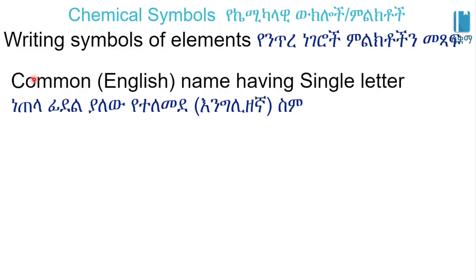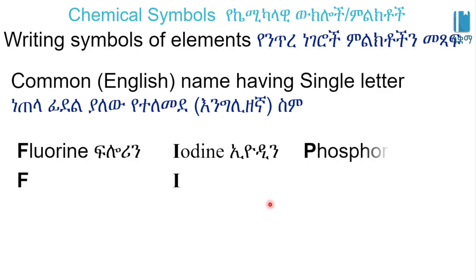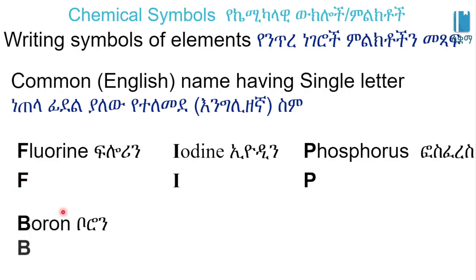When we have a single letter symbol, we can represent elements like fluorine with the symbol F. We have phosphorus as well, and some elements have symbols that represent their names.